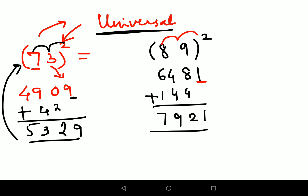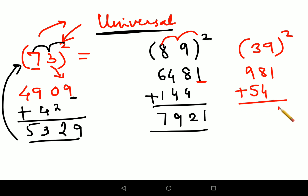Let's find 39 squared using the universal trick. 3 squared is 9. 9 squared is 81. Multiply 3 × 2 × 9 = 54. Leave the unit digit of 81 (which is 1) alone, then add 5 and 4+8 to get 12 with a carry of 1. So the final answer for 39 squared is 1521.